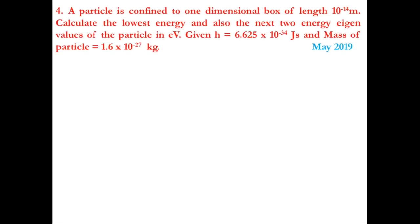Next problem: A particle is confined to a one-dimensional box of length 10⁻¹⁴ m. Calculate the lowest energy and the next two energy eigenvalues in electron volts. Given h = 6.625×10⁻³⁴ J·s and mass of particle = 1.67×10⁻²⁷ kg. This question was asked in May 2019.